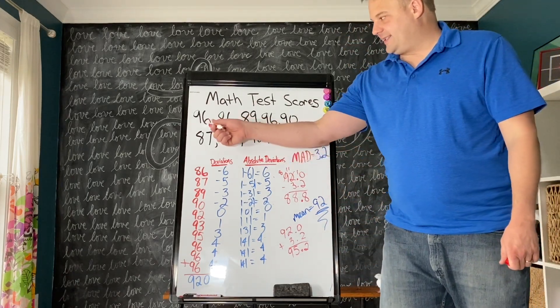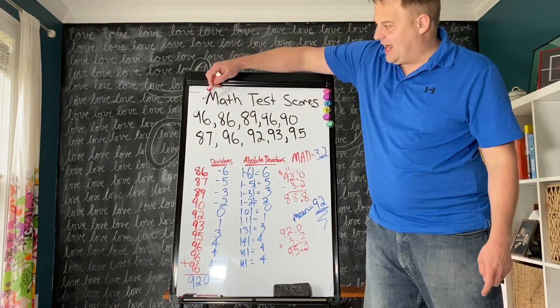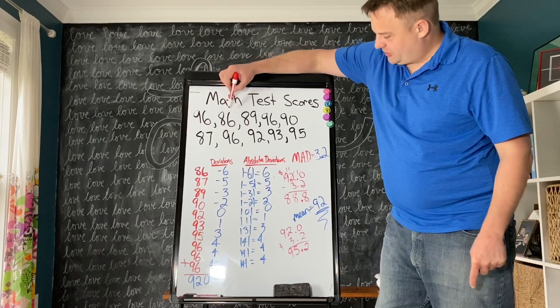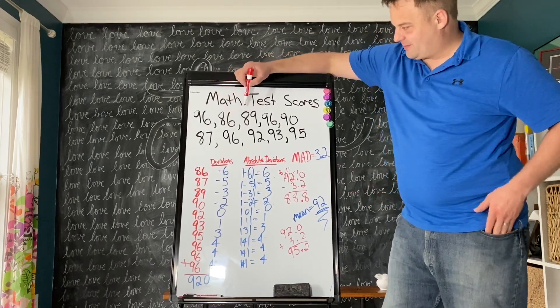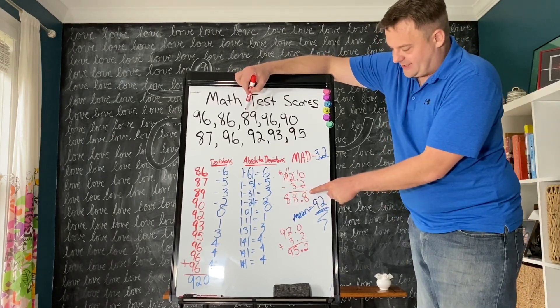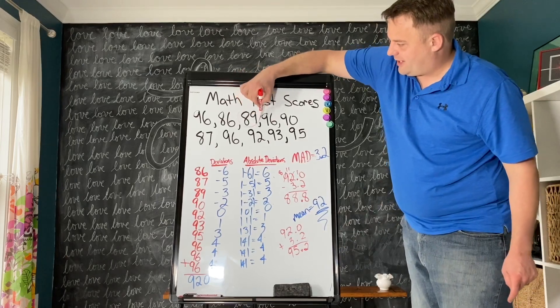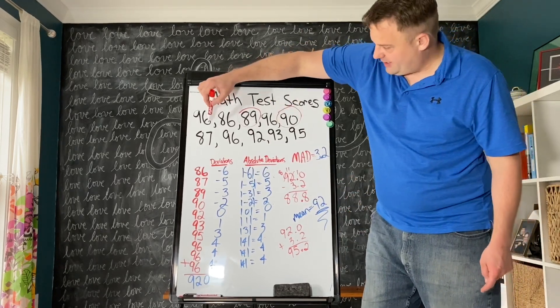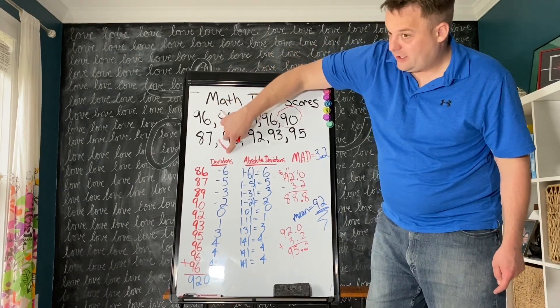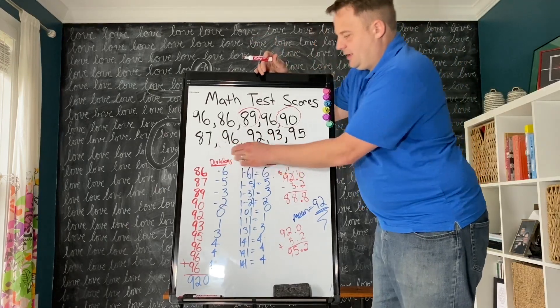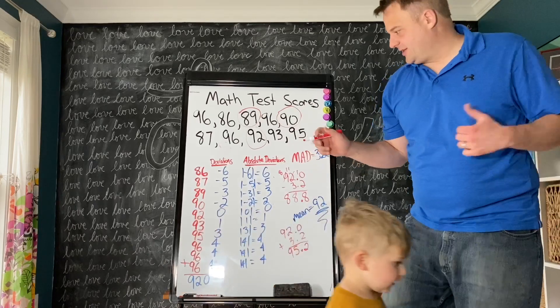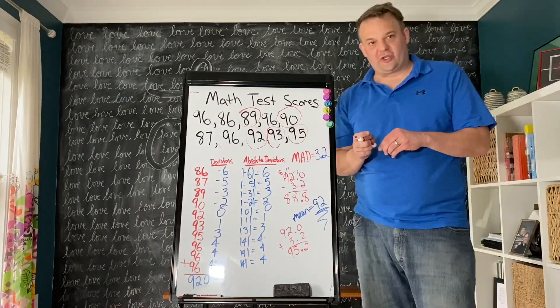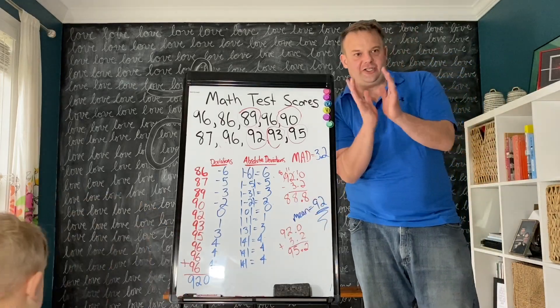Let's see which values fall within the mean absolute deviation. 96 does not, it's too high. 86 is below, so that one doesn't fall within. 89 is above 88.8 and below 95, so this one falls within it. 90 is between these two. 87, no. 92 falls within it. 93 falls within the mean absolute deviation, and 95 falls within the mean absolute deviation. So all these scores fall within the average range.